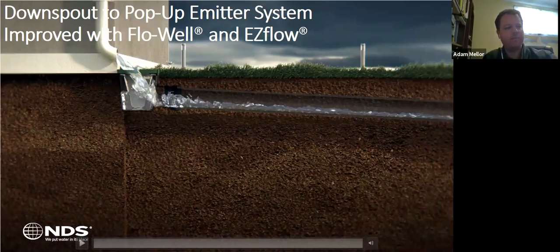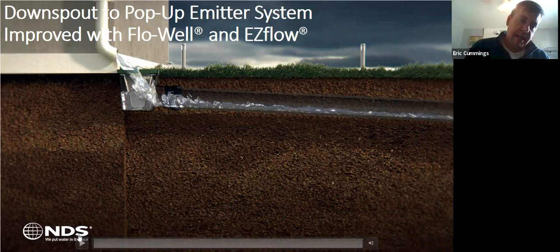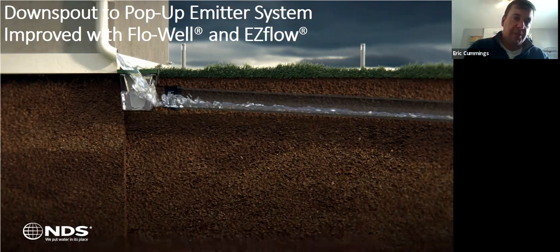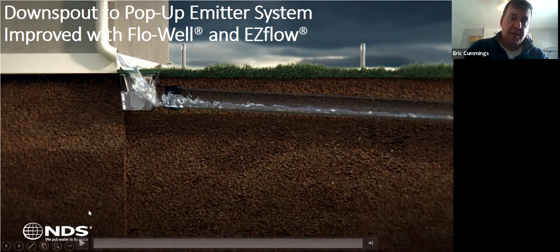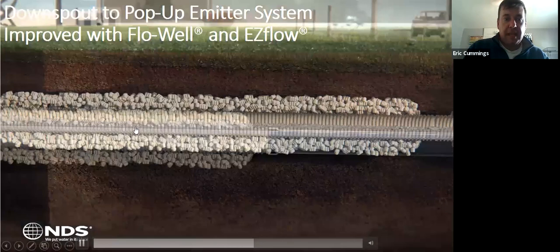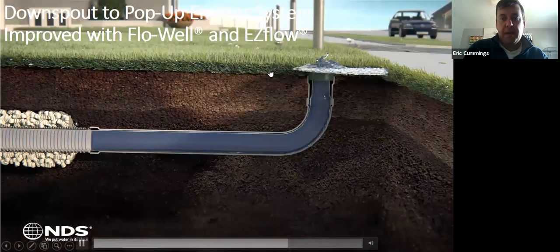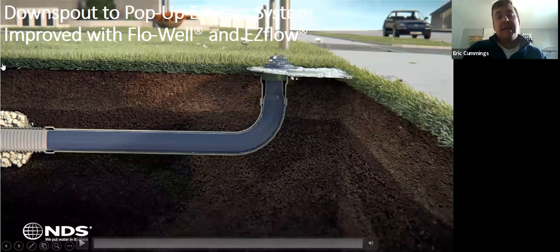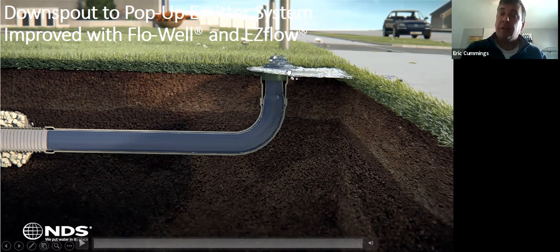Here's a video showing how everything works together — a catch basin with a filter conveys water through a four-inch pipe to the easy flow, then out through a pop-up emitter. Because you have easy flow and a flow well in the system, the amount of water actually making it to the emitter is reduced compared to what goes into the system.